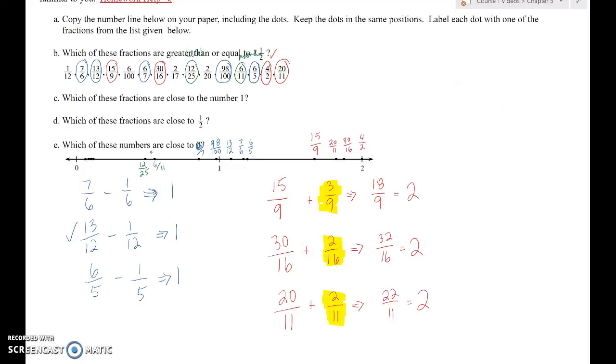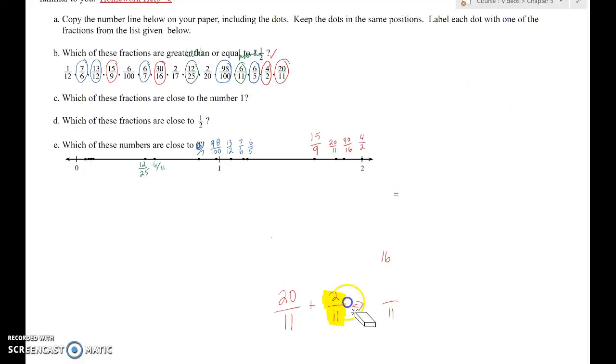Now let's do the last ones which are close to 0. Let's do the last ones which are close to zero. Let me get rid of some of this stuff here. Alright, let's find the ones that are closest to zero and work our way to the larger ones. Alright, so we've got 1/12. We have 6/100. We have 2/17. We have 2/20.